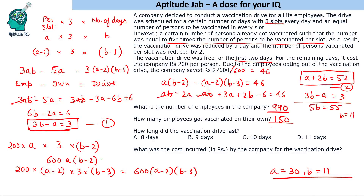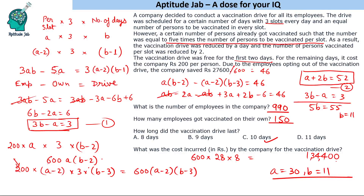Now we can answer the questions. The total number of employees is 3ab = 3 × 30 × 11 = 990. The number of employees who got vaccinated on their own is 5a = 150. The vaccination drive was initially planned for 11 days but was reduced by one day, so it lasted 10 days. The actual cost incurred by the company is 600 × (a minus 2) × (b minus 3) = 600 × 28 × 8 = rupees 1,34,400.